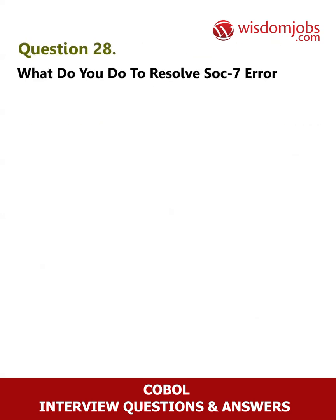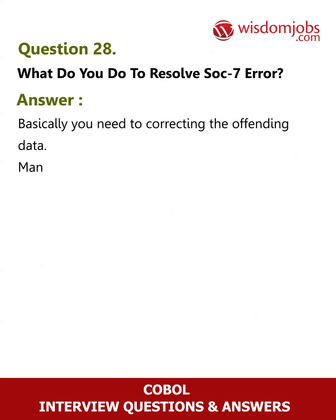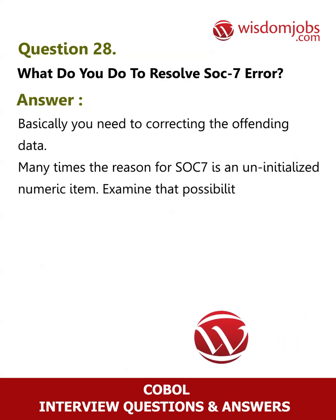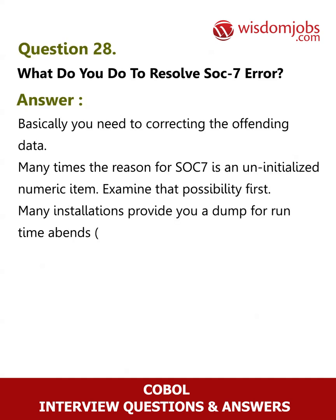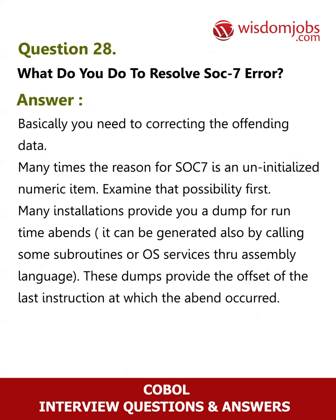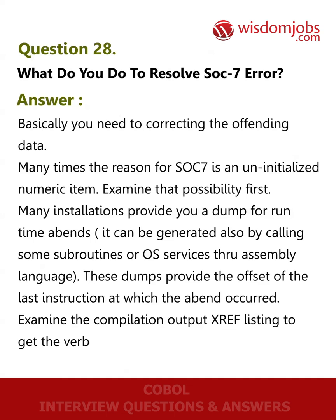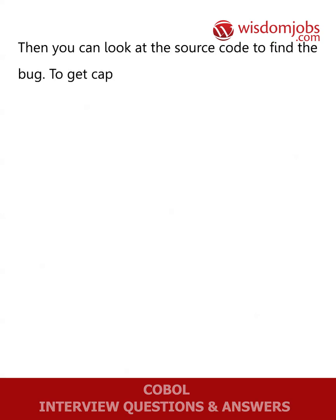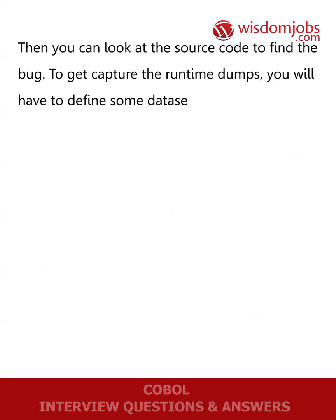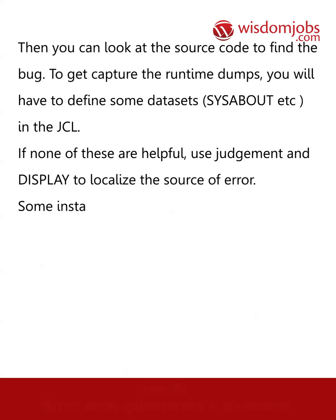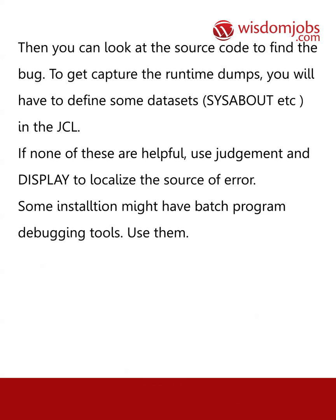Question 28: How do you resolve a SOC 7 error? Answer: Basically you need to correct the offending data. Many times the reason for SOC 7 is an uninitialized numeric item — examine that possibility first. Many installations provide a dump for runtime abends, which can also be generated by calling subroutines or OS services through assembly language. These dumps provide the offset of the last instruction at which the abend occurred. Examine the compilation output XREF listing to get the verb and line number of the source code at this offset, then look at the source code to find the bug. To capture runtime dumps, you will need to define some datasets in the JCL. If none of these are helpful, use judgment and display statements to localize the source of error. Some installations might have batch program debugging tools — use them.